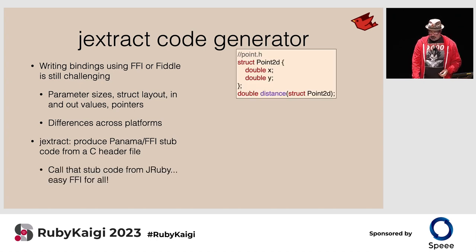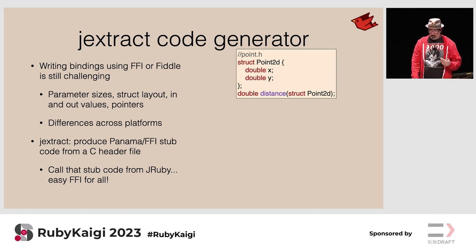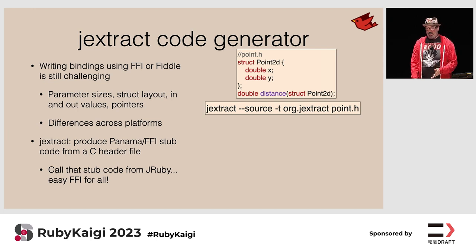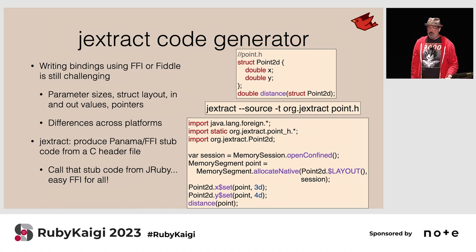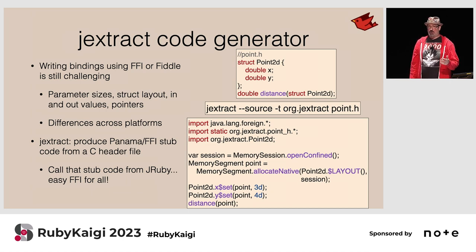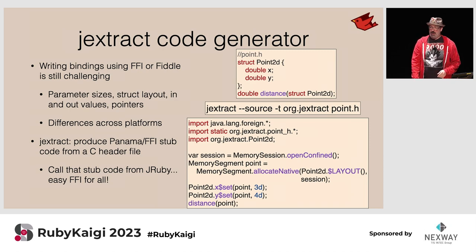Here's an example from jextract's home page: a struct with a 2D point with x and y, calculating a distance. We run jextract at the command line — we can also do this at runtime and generate code in memory — and it dumps out Java code that can call this library. This Java code is directly callable from JRuby. In the future we'll use this to back our own FFI and make native calls a lot faster.